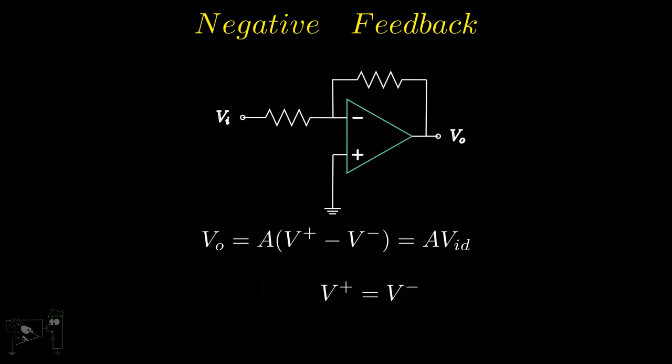In the last video, we saw what the virtual ground concept is and what happens to an op-amp when it is in feedback. We need the op-amp to be in negative feedback so that we can amplify signals without the output saturating.